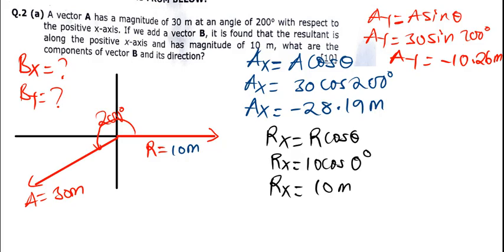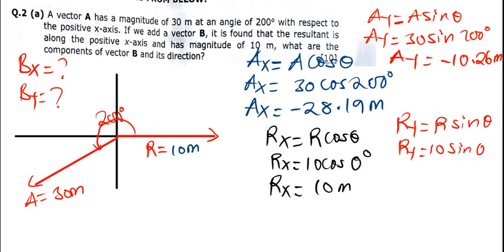Now the y component of the resultant: Ry = R sin θ = 10 sin 0° = 0.